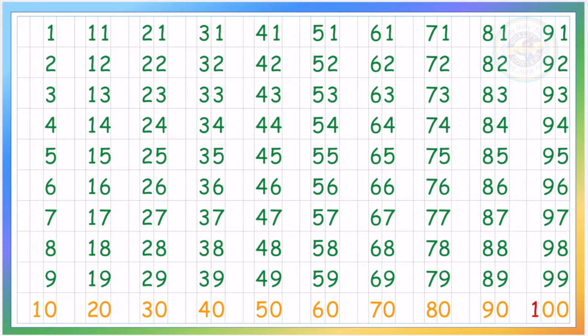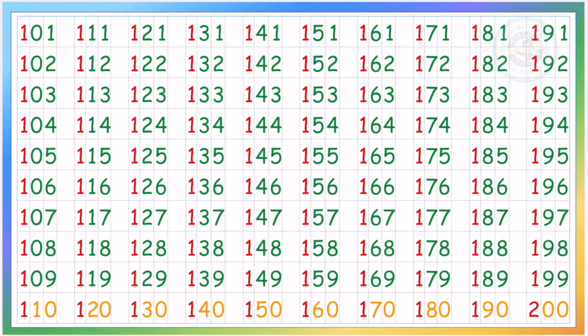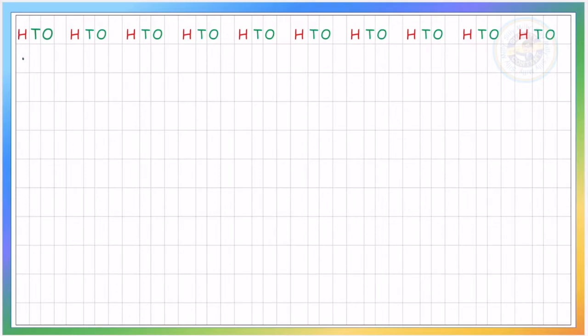Here we start, one hundred and one. So we write zero in the middle because under ten there is no number. One is a single number, it's only one number. So one hundred and two, one hundred and three, one hundred and four.